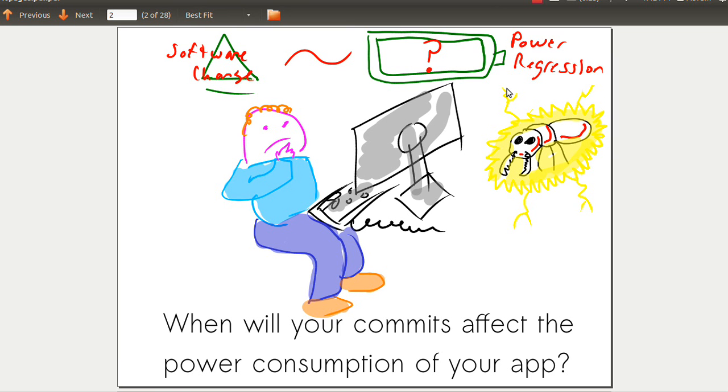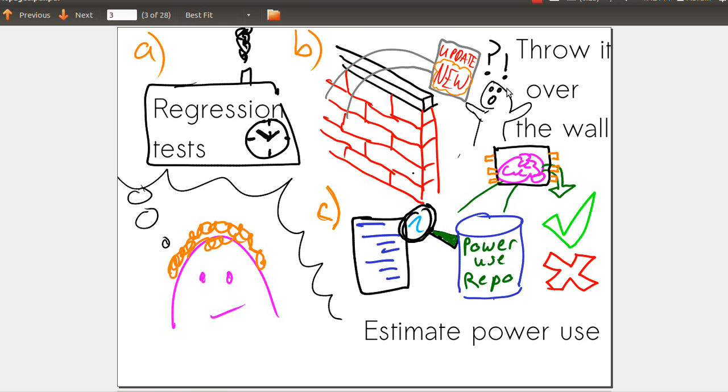When a programmer addresses this problem, they might consider different ways to test. First, they could do a regression test - write up a test case, measure it, run it multiple times, measure it again, get stats on that until they get a stable reading, and then understand if they've actually changed anything.